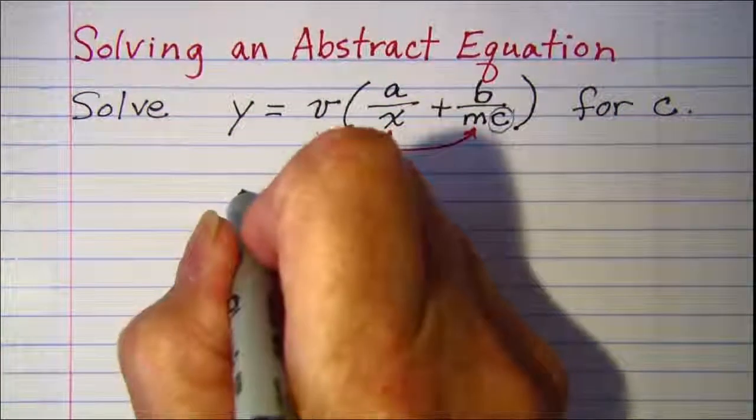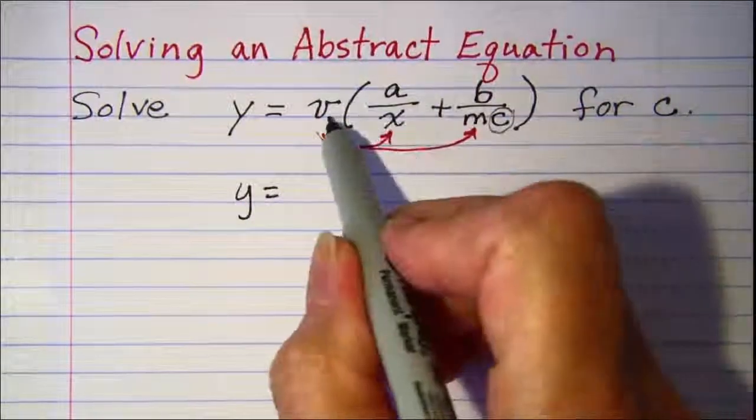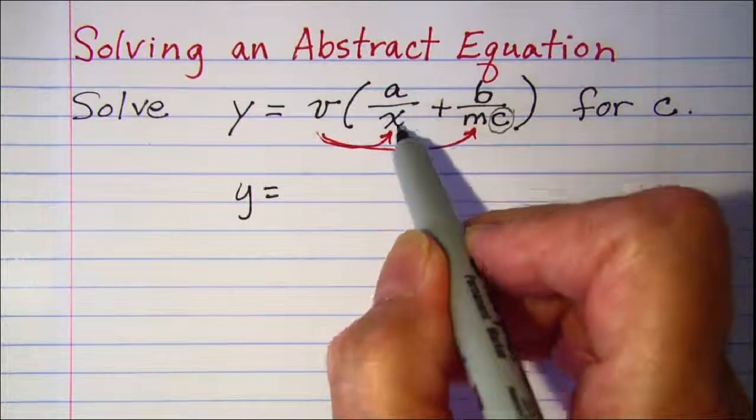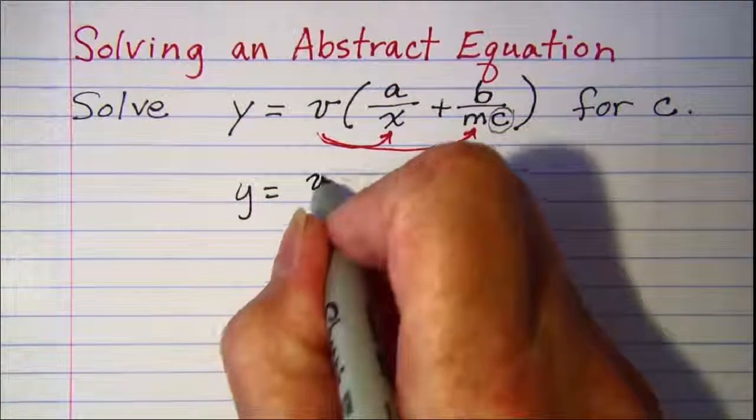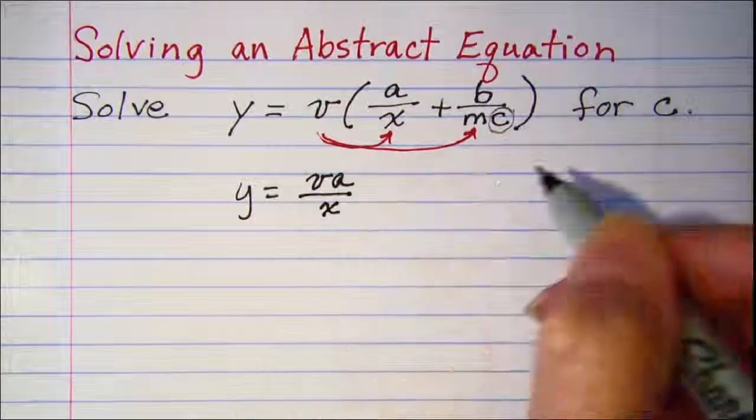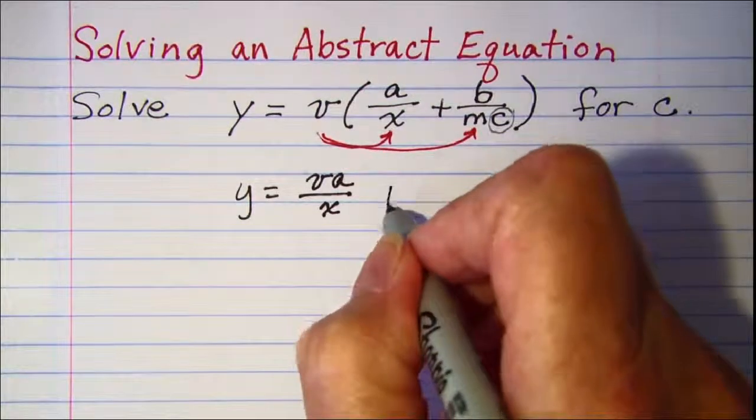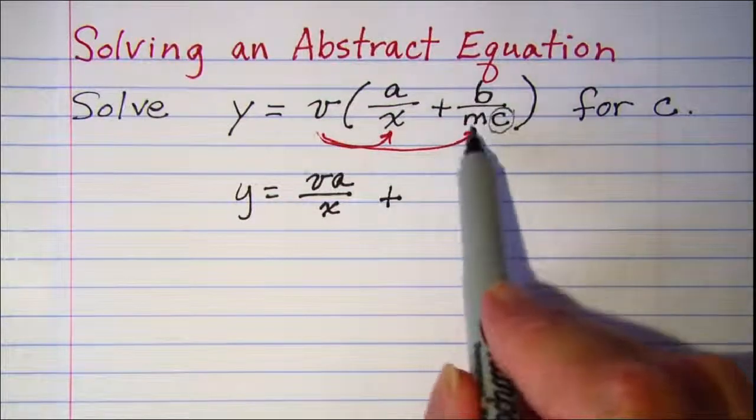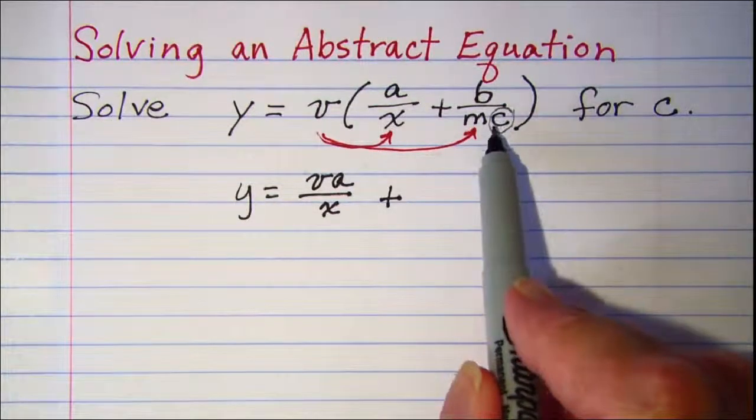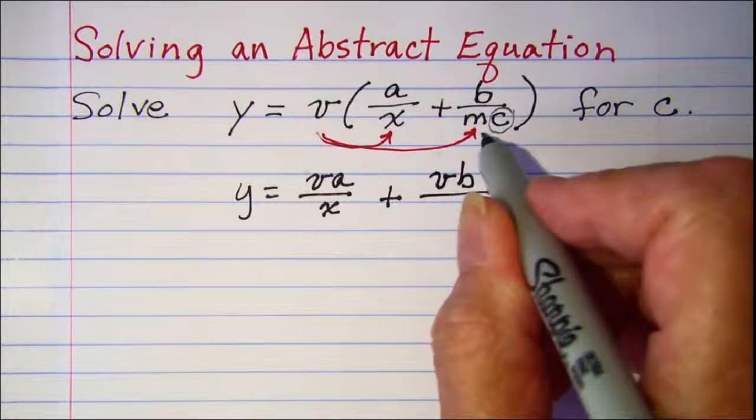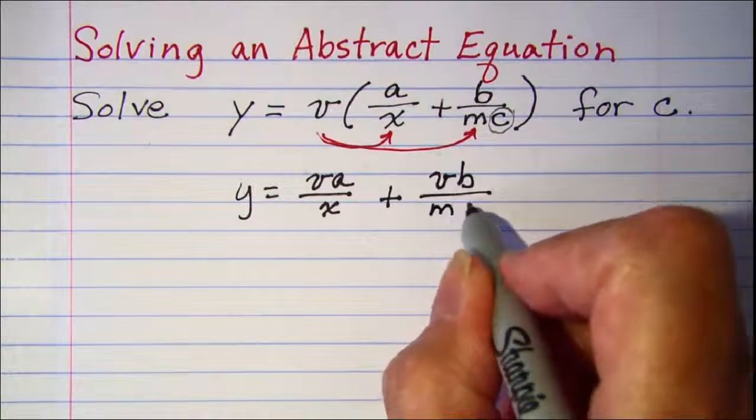So copy y, and when I multiply v times the fraction a over x, I have va in the numerator and x in the denominator. Plus, when I multiply v times the fraction b over mc, I have vb in the numerator and mc in the denominator.